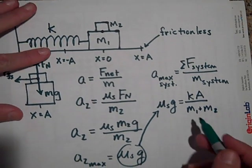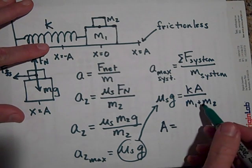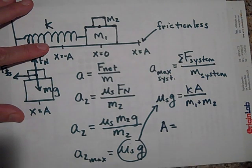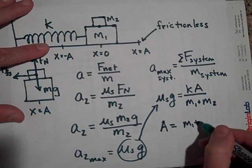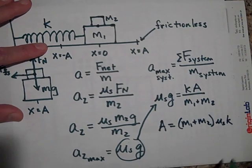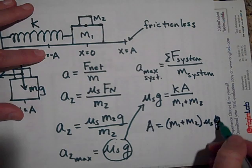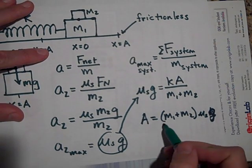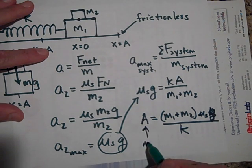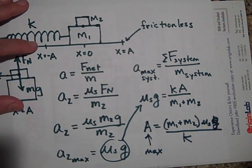So what's the maximum amplitude? The maximum amplitude for this not to slide: just solve for the maximum amplitude. It's going to be M1 plus M2 times μs times g divided by K. This is the maximum amplitude. If you pull it back any further, this top block is going to fall off.